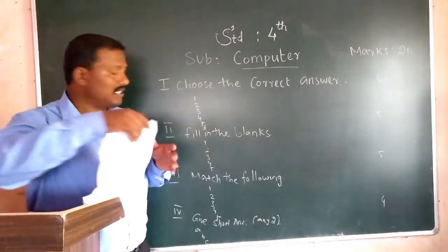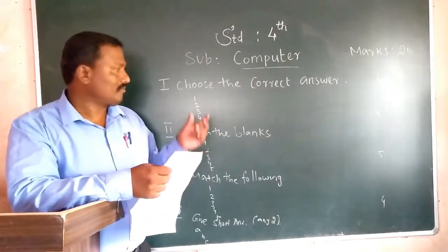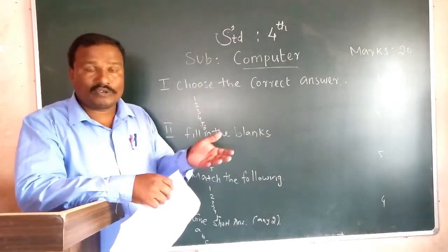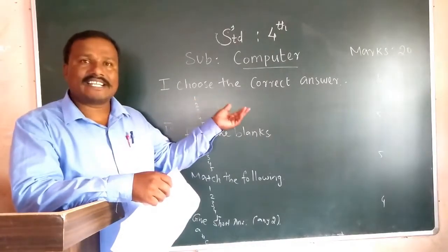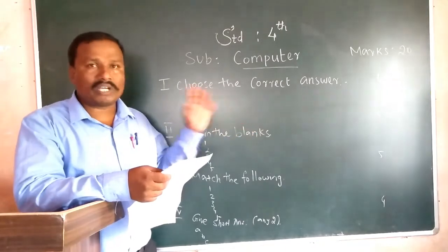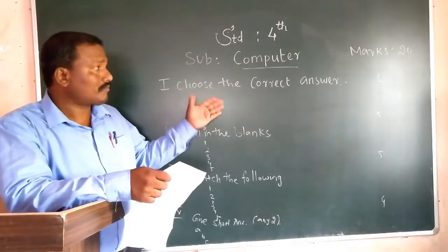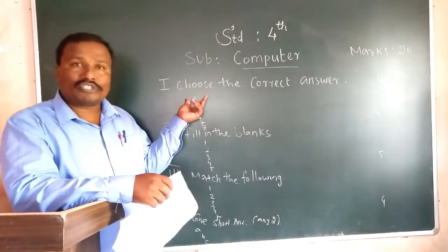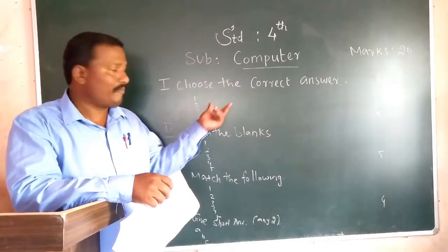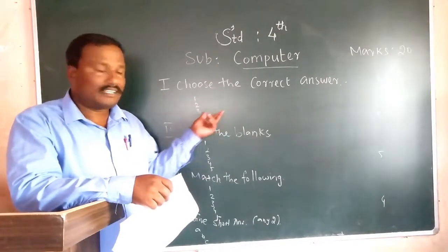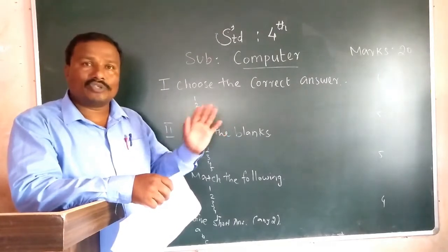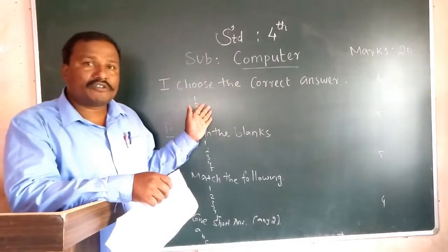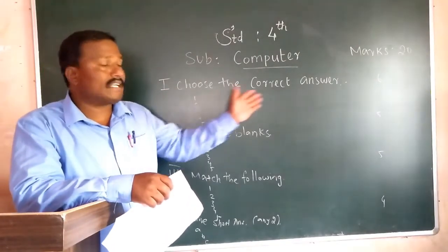For example, the first question: 'Keyboard is an input device.' Don't write the question — just put question number 1 and write the answer, for example, 'input device' or 'output device.' Only write the answer for each question number. There are a total of 6 questions, so you might get 6 marks.